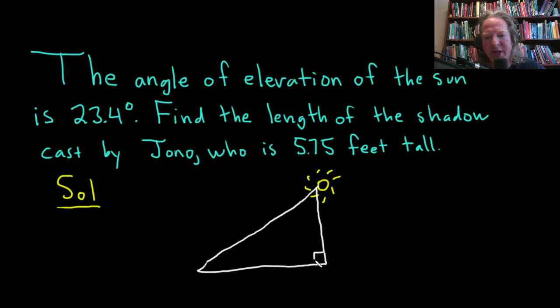This angle here is going to be the angle of elevation of the Sun, and we're told it's 23.4 degrees. We have to find the length of the shadow cast by Jono, who is 5.75 feet tall.